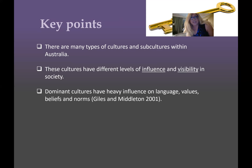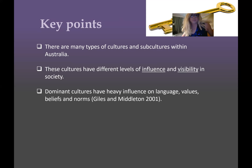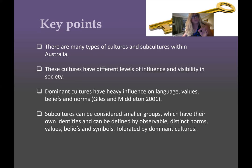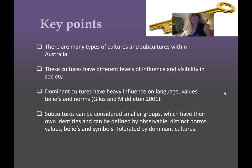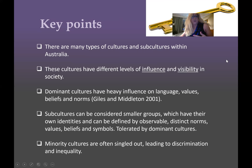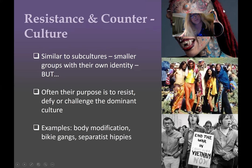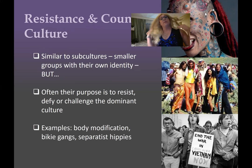We're going to think about how some people go against those norms and counteract or resist them. Subcultures can be considered smaller groups which have their own identities, defined by observable distinct norms, values, beliefs, and symbols, and they are often tolerated by the dominant culture. Minority cultures are often singled out, and that leads to discrimination and inequality. You might have also come across the French philosopher Michel Foucault in your studies.